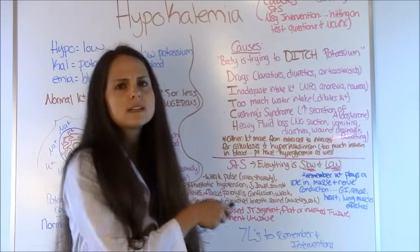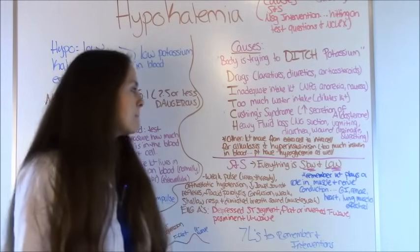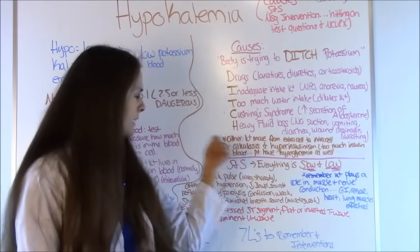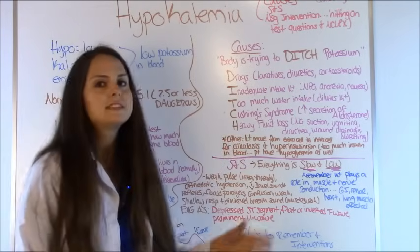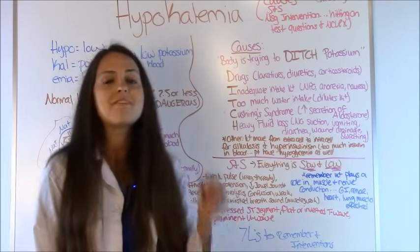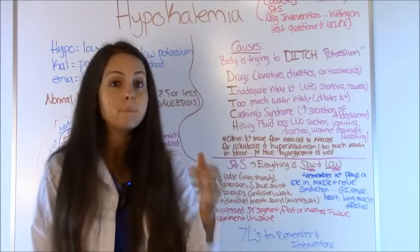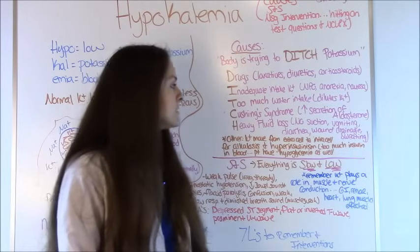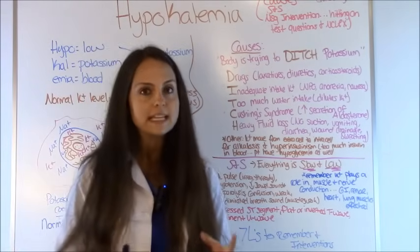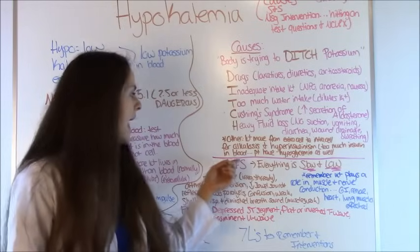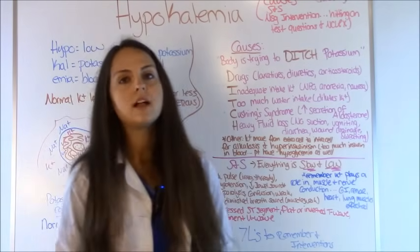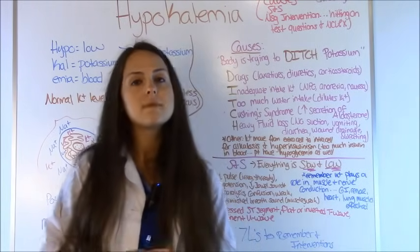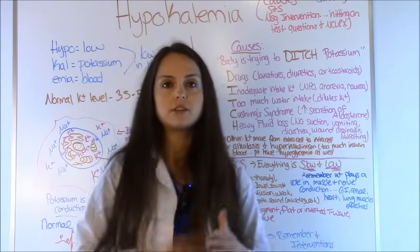Some other causes for low potassium: potassium can move from the extracellular fluid into the intracellular cell. This happens during alkalosis — now whenever you have acidosis, that happens in hyperkalemia, but alkalosis can cause hypokalemia. And hyperinsulinism — where you have too much insulin in the blood and the patient may be having signs of hypoglycemia — can also cause hypokalemia because glucose and potassium work together in a lot of the same things.